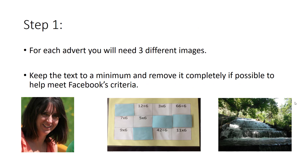For each advert you create you're going to need to produce three different images. In each image keep the text to a minimum and remove it completely if possible, to help meet Facebook's criteria. Ideally you want your first image to be that of your happy smiley face, the second image something to do with what you're advertising, and thirdly one of an animal, nature, or something along those lines.